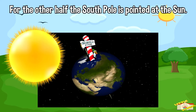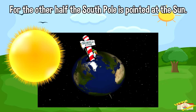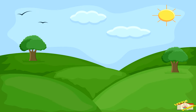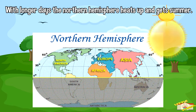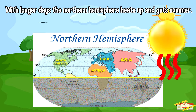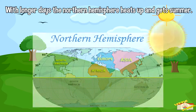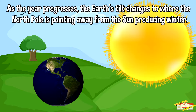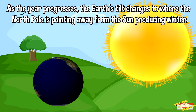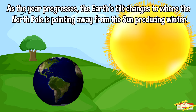For the other half, the South Pole is pointed at the Sun. With longer days, the Northern Hemisphere heats up and gets summer. As the year progresses, the earth's tilt changes so that the North Pole is pointing away from the Sun, producing winter.